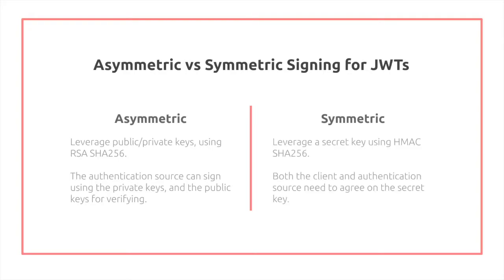The private key and public key are linked. For symmetric algorithms, they use a secret key using HMAC-SHA256. Both the client and the authentication source need to agree on the secret key. This can become a problem for larger sites or systems because you need consensus on what that secret key is, and modifying it would need to be an atomic operation.